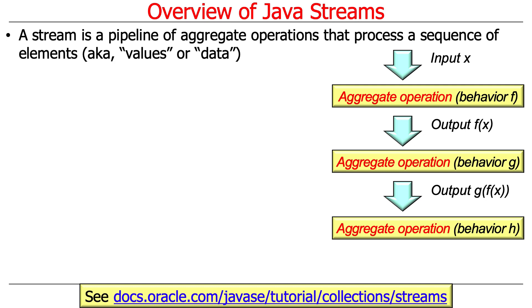So what is a stream? A stream is basically a pipeline of aggregate operations that process a sequence or a flow of elements, which are sometimes called values or data. In many cases they're objects, although we tend not to think too much about what flows through a stream as objects, for reasons that will become clearer later on.